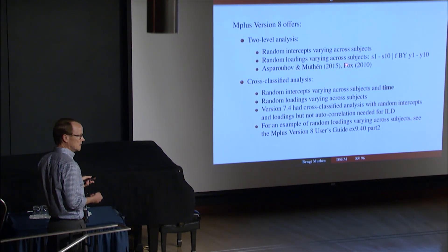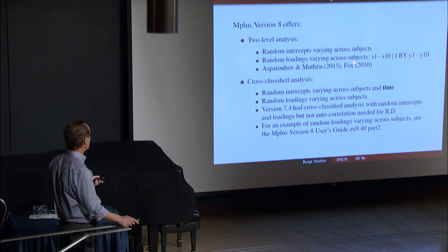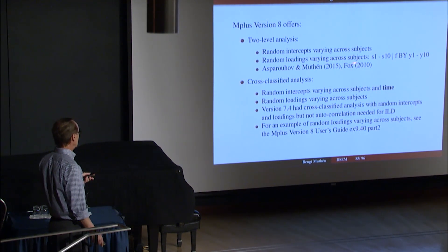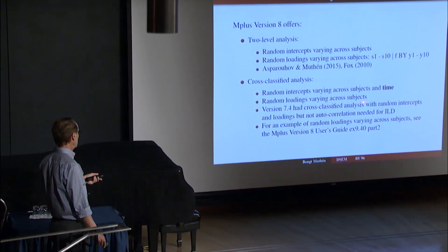And Sean Paul Fox, is that another Dutch? Another Dutch. A very good researcher too. It's a book on Bayesian analysis of IRT where he talks about these random measurement parameters. Cross-classified analysis of random intercept can vary across time, sorry, vary across subjects and time. Random loadings can vary across subjects only, not time yet.